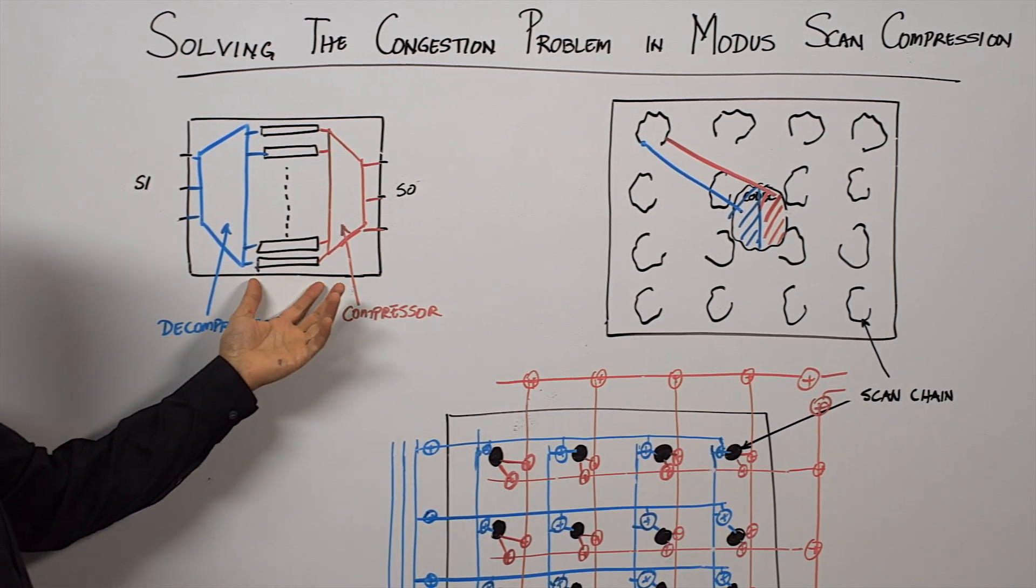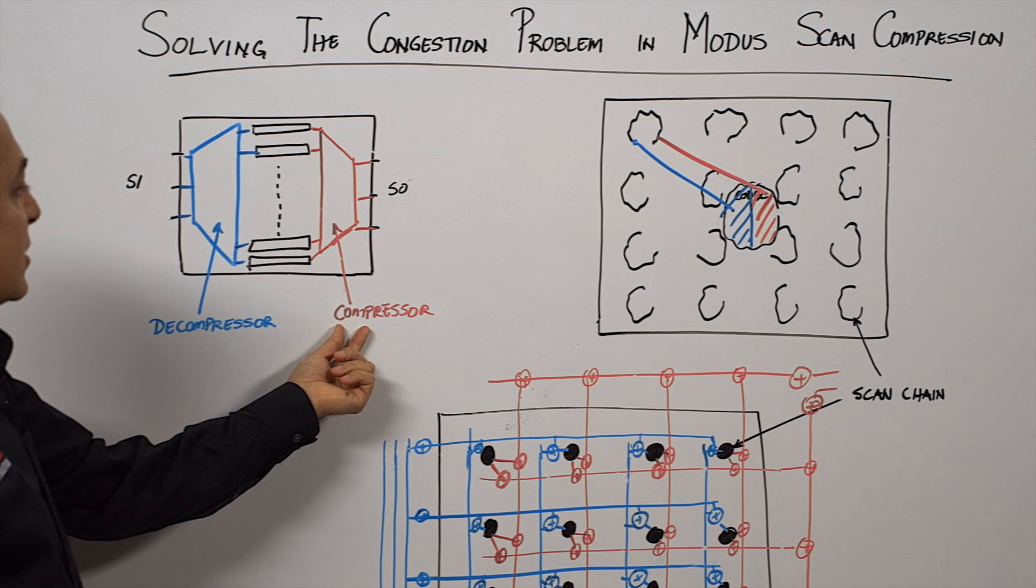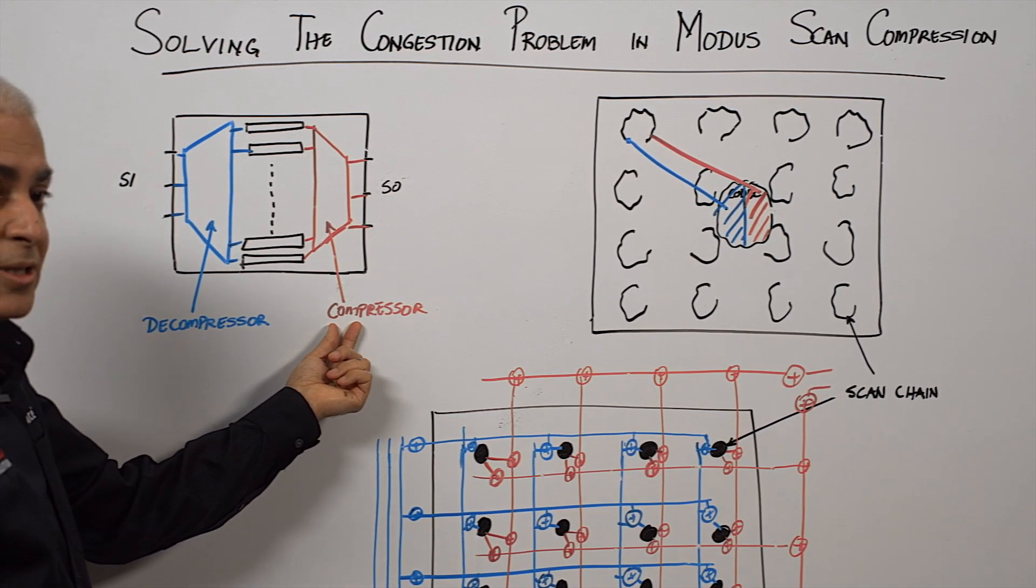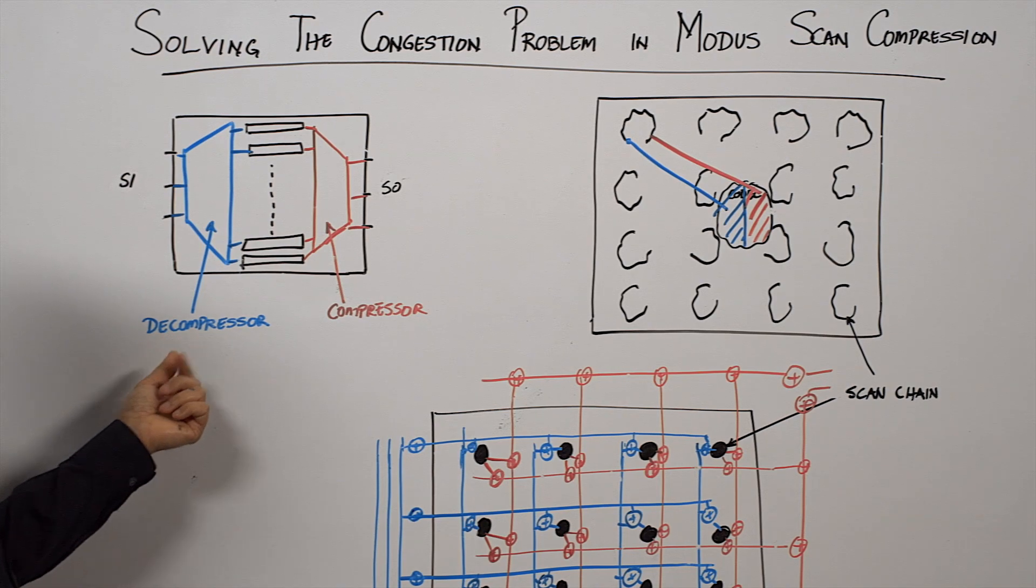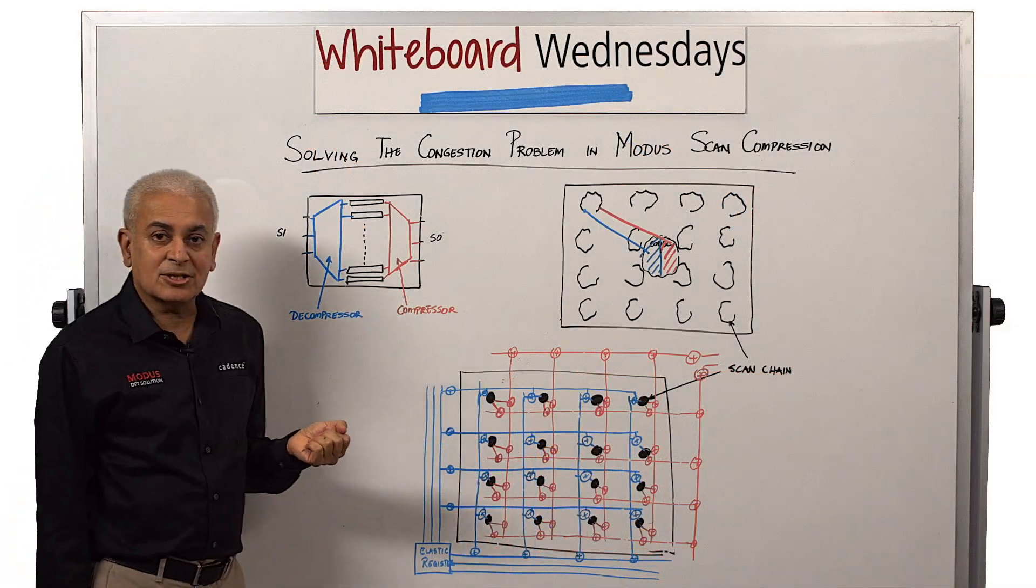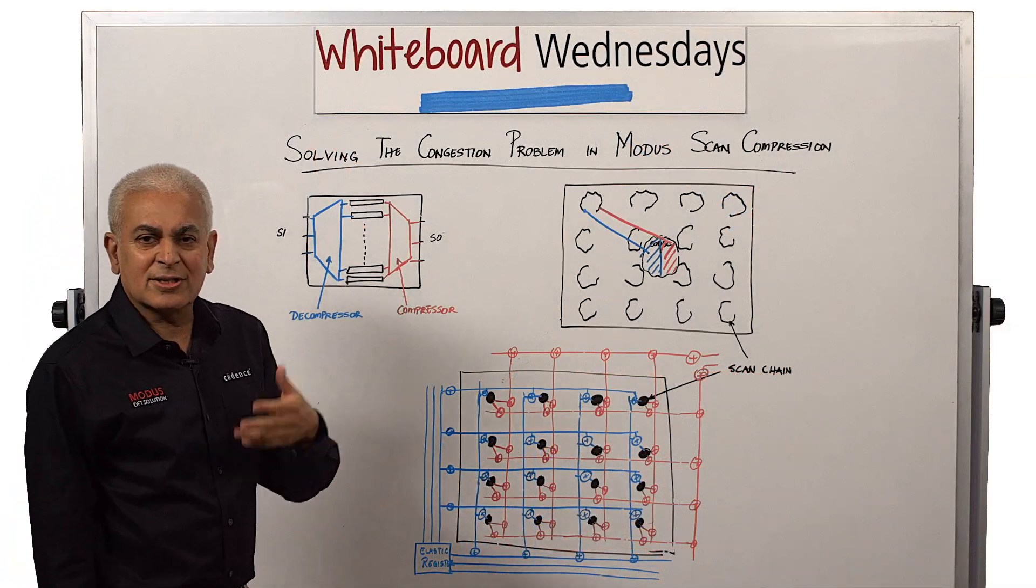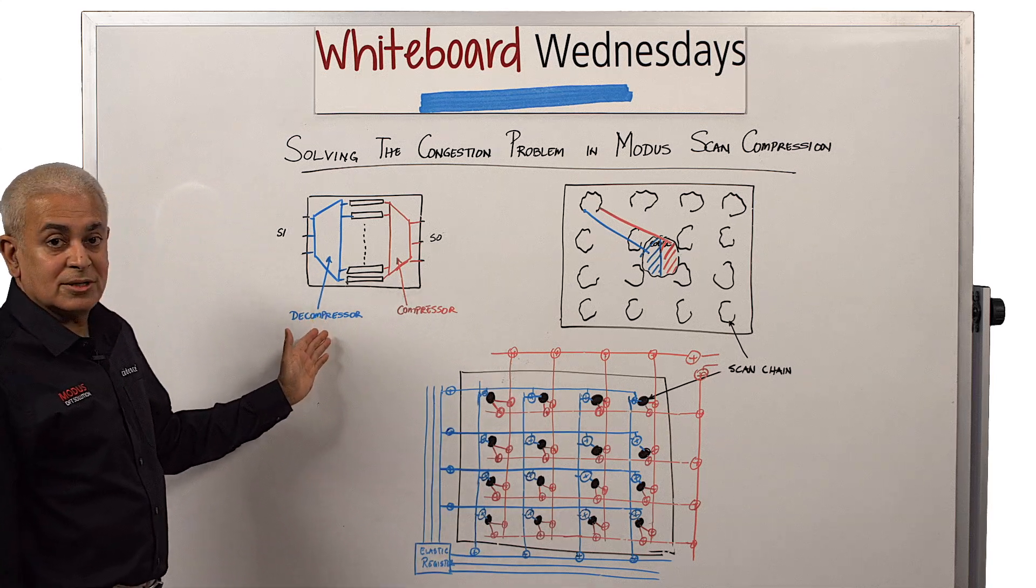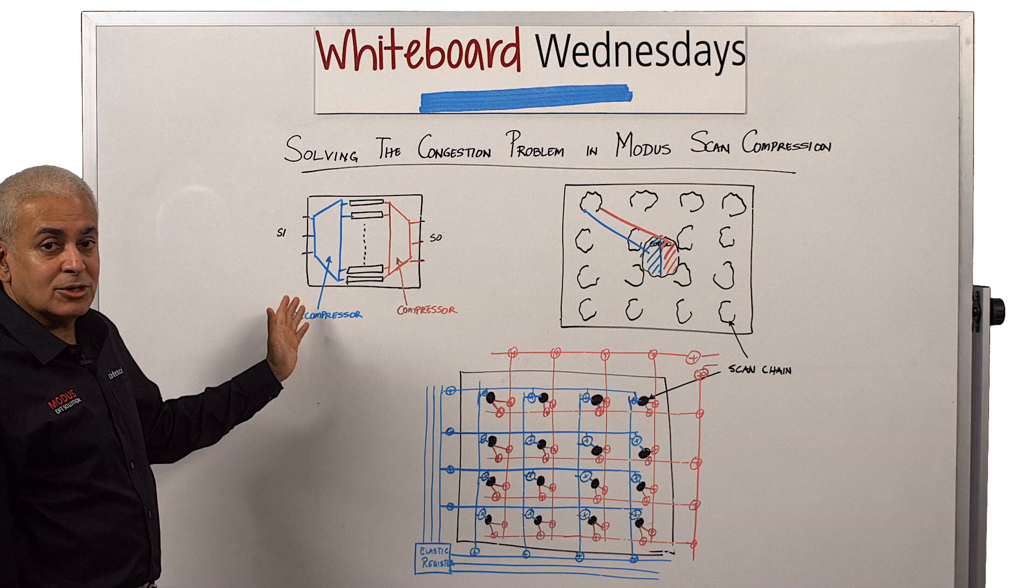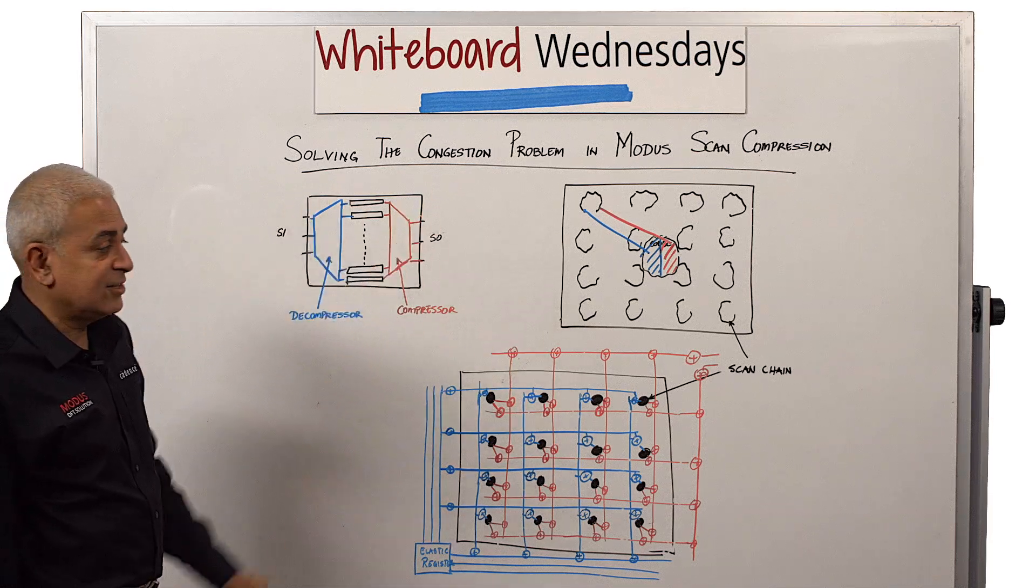In the Cadence solution, the output side is implemented with XORs and the input side is implemented with an elastic register which consists of a sequential engine, which is an LFSR-based sequential engine, and some XORs which are used to spread the values of that engine across to these scan chains.